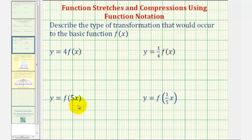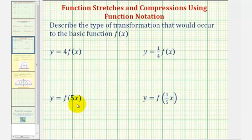For the next two, notice how we're multiplying x by a constant, which will then affect the input of the function. And the inputs lie along the horizontal axis, or x axis, and therefore in this case these two will give us either a horizontal stretch or a horizontal compression.